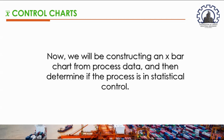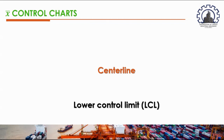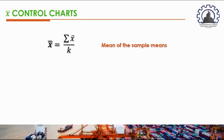We will be constructing an X-bar chart from process data and determining if the process is in statistical control. A control chart comprises a centerline, a lower control limit (LCL), and an upper control limit (UCL). The centerline of the X-bar chart is X-double-bar, which is the mean of the sample means.